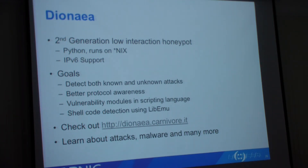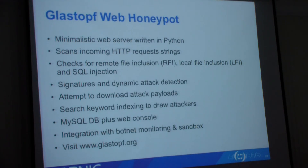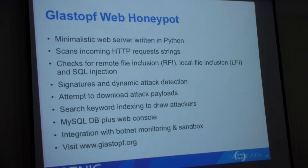Dionea is a second generation of low-interaction honeypots — it detects known and unknown attacks. Kippo emulates an SSH server, allows the attacker to feel as if they are logging in, and records keystrokes and everything else — it's very interesting. Glastopf is a web honeypot written in Python that does things to make the attacker believe it is a web application. You'll be surprised that many of the attacks are actually automated — there is nobody really sitting behind a computer trying to do a SQL injection. In most cases it's just an automated script that uses Google to search for web applications and then tries different kinds of attacks to get in.